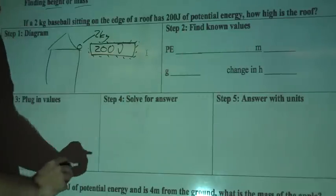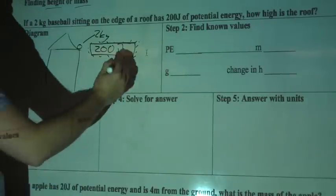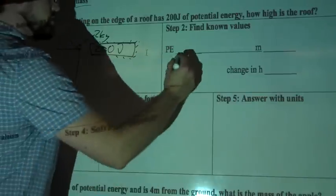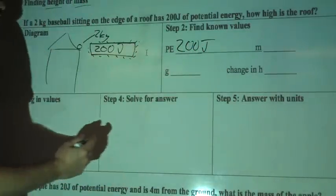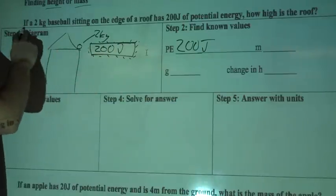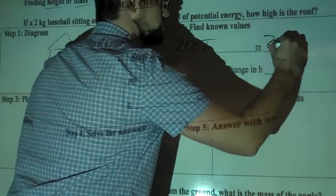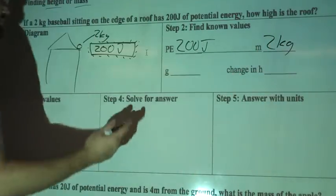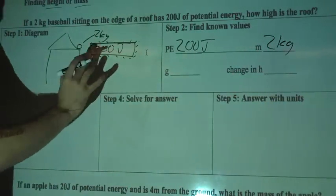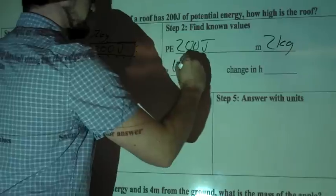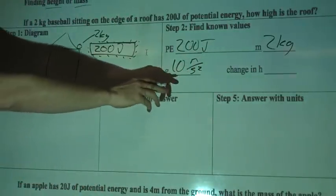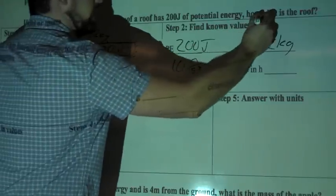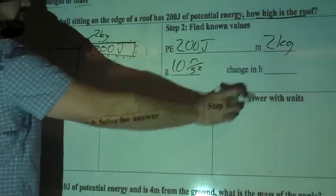We're looking for how high the roof is. So let's plug in what we know, 200 joules potential energy, so we've got 200 J. Mass, we know it's a 2-kilogram baseball, so we'll write that up here, 2 kilograms. Gravity, it doesn't say we're on another planet, so we're going to assume it's on Earth, so that's 10 meters per second squared. And then change in height, we're actually looking for how high the roof is, so we're going to leave that blank for now.